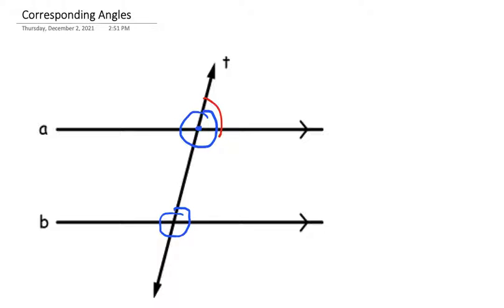So a corresponding angle is in the same position, so if this one's on the top right of that circle, then a corresponding angle will be here on the top right as well. So we often use tracing paper to see that they're exactly the same. They're just a translation up one line or down one line. So let's try that a few times.